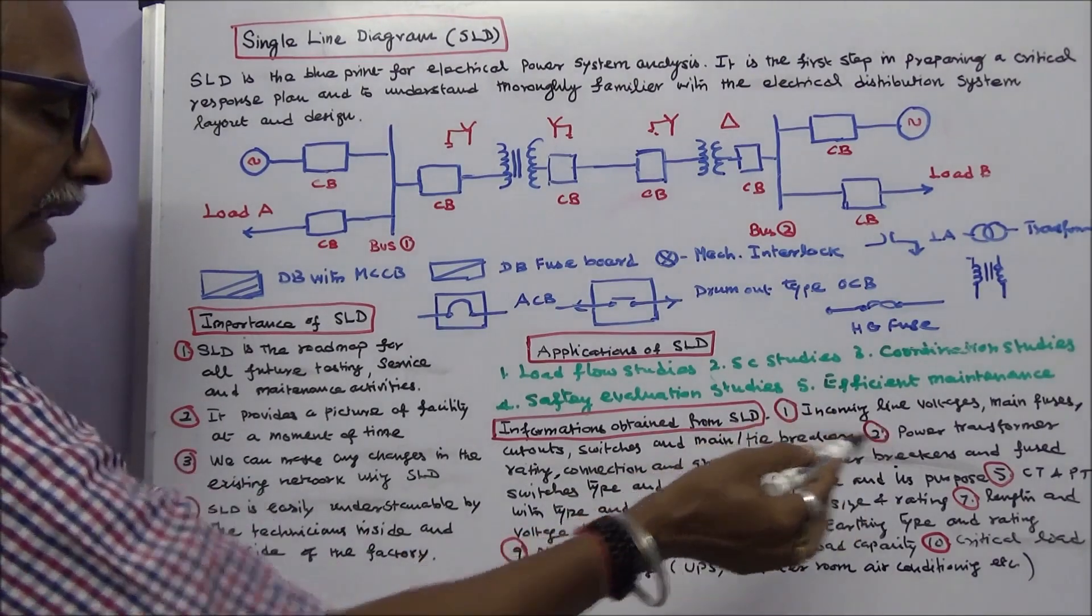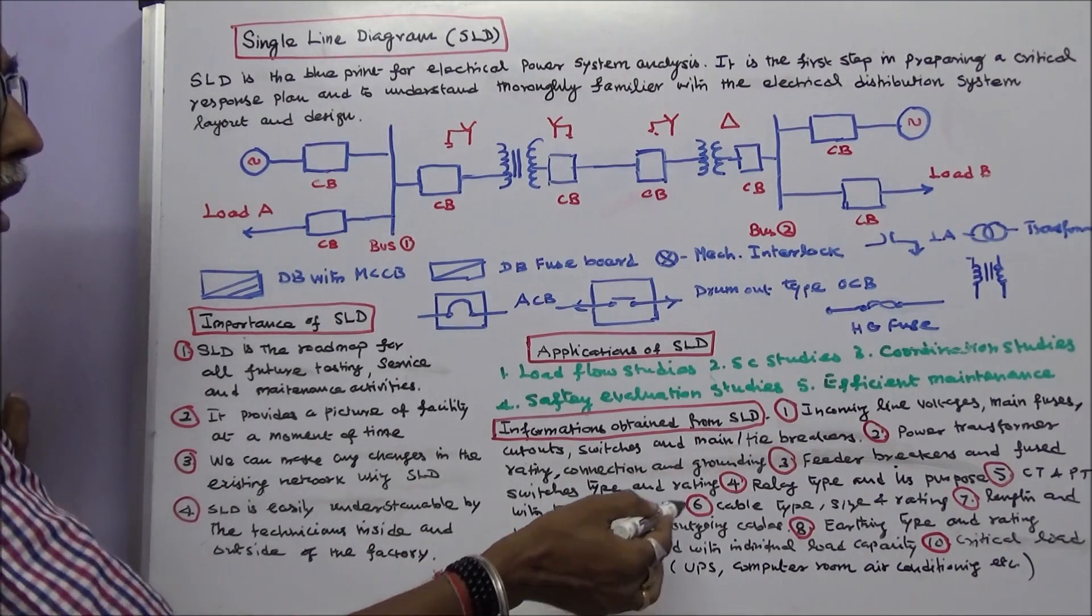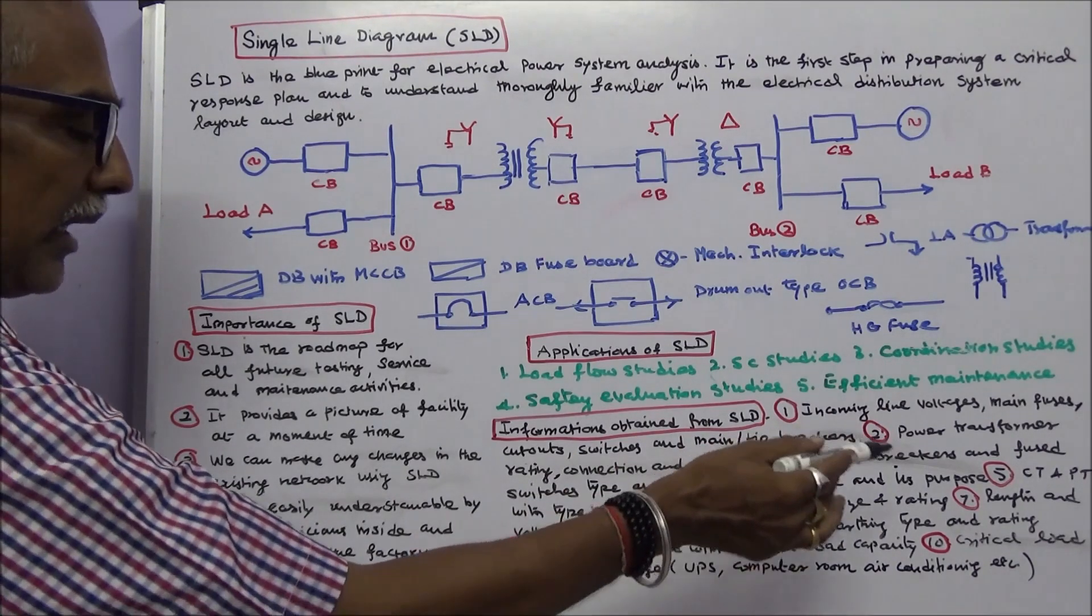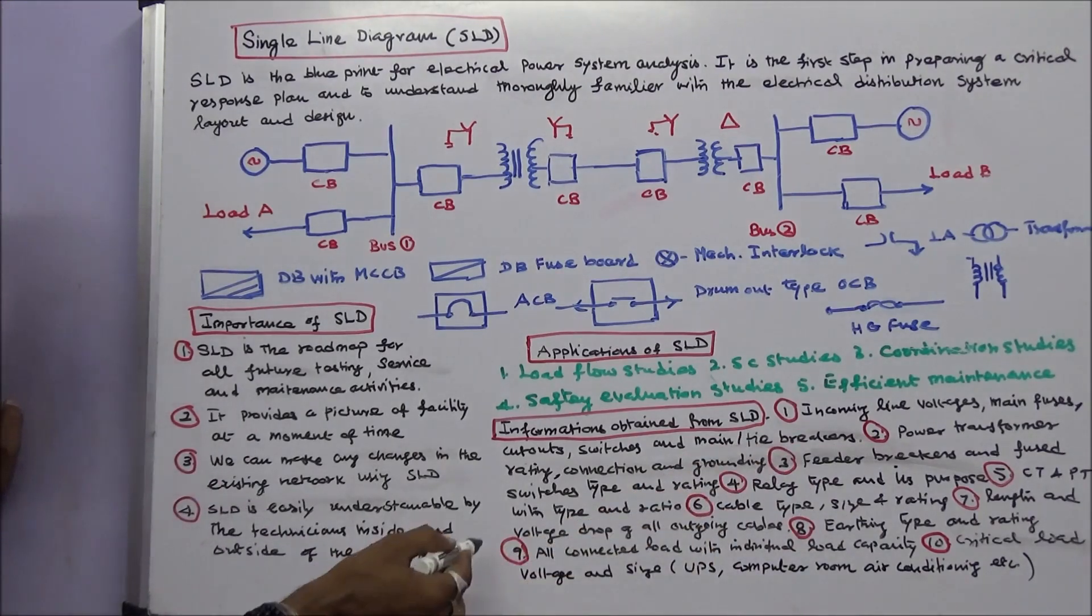Number seven, length and voltage drop of all outgoing cables. Number eight, earthing type and rating.